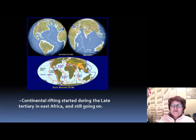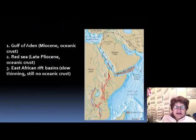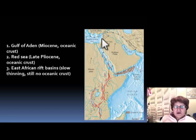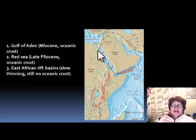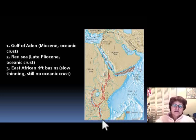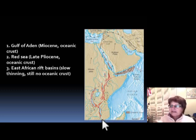During the Miocene, continental rifting started in East Africa. This shows the triple junction in East Africa, whose three arms are the Red Sea, the Gulf of Aden, and the East African Rift Basin. The oldest oceanic crust is the Gulf of Aden, which has Miocene oceanic crust. The Red Sea is slightly younger with Pliocene oceanic crust. The East African Rift Basin is still thinning but doesn't yet have oceanic crust — scientists believe this is the failed arm of the triple junction that will never become an ocean.